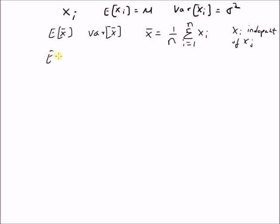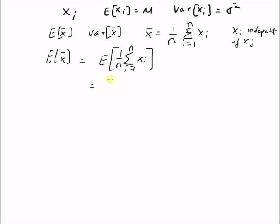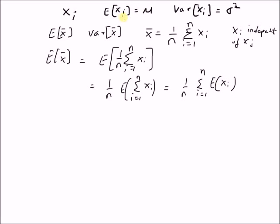The mean is expectation of X-bar. The mean of the sample mean is the expectation of the definition, that is 1/n times the summation i=1 to n of X_i, which is equal to 1/n times the expectation of the summation i=1 to n of X_i. Since expectation is a linear operator, we have 1/n times the summation i=1 to n of expectation of X_i.